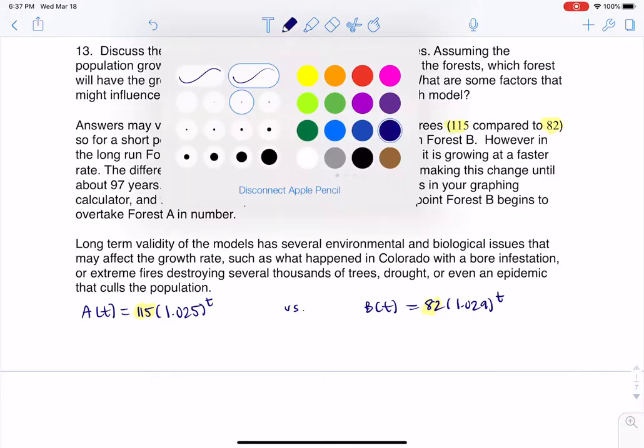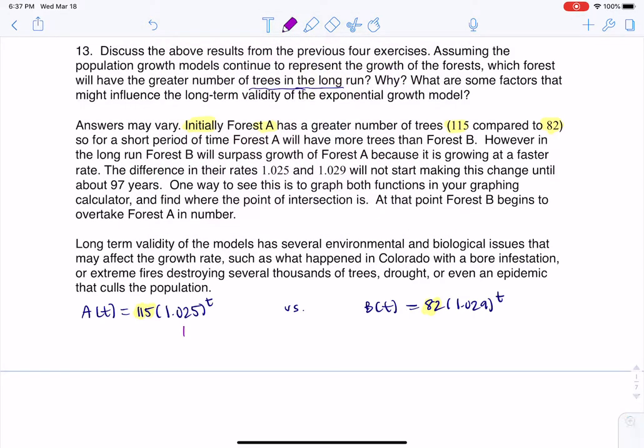But the key piece that we want to look at here is the base, right? So if we look at the base of Forest A versus the base for the exponential model in Forest B, you can see that this base is larger. So what this is actually saying is Forest B is growing, that's not how you spell is, is growing at 2.9% per year.